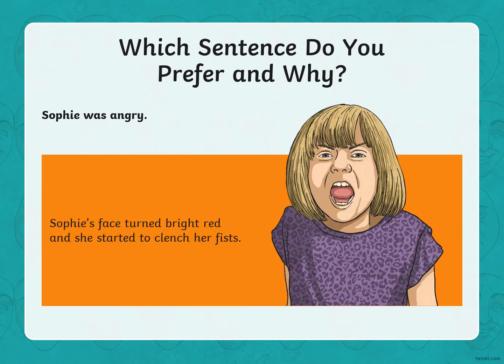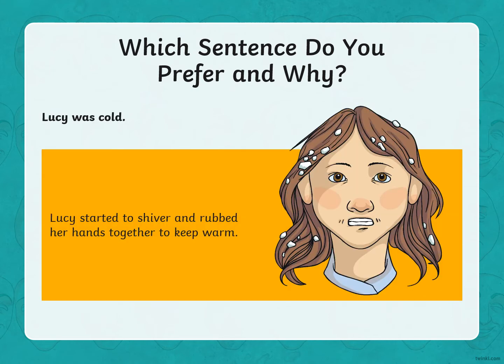Another one. 'Sophie was angry.' Or: 'Sophie's face turned bright red and she started to clench her fists.' What else might you do if you're angry? How else could you describe and show the reader what is happening, rather than telling them the emotion that they are feeling?